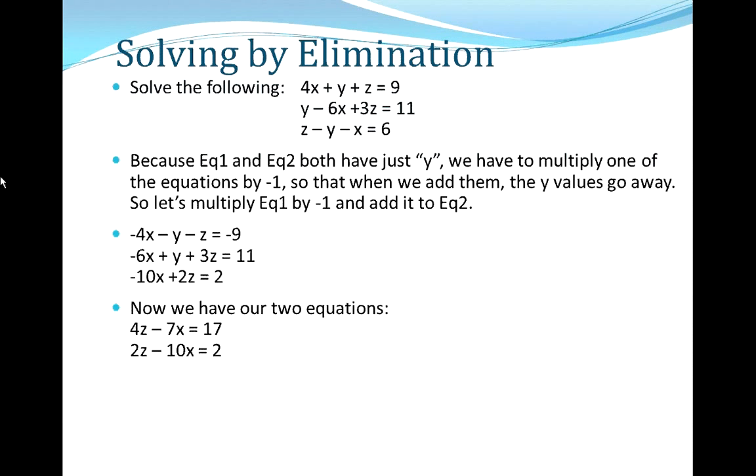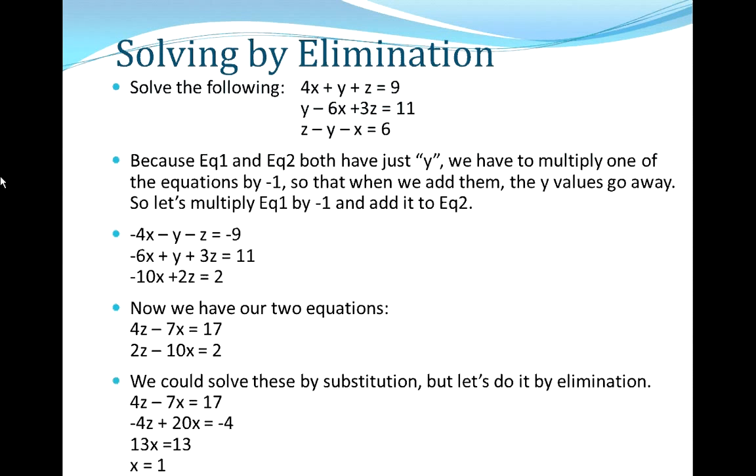So now this new system of two equations and two unknowns looks an awful lot like our first example, which we thought was pretty easy. We could solve these by substitution, but let's do it by elimination instead. So what we've done here is multiplied equation two in our newly found equations in x and z by negative 2.